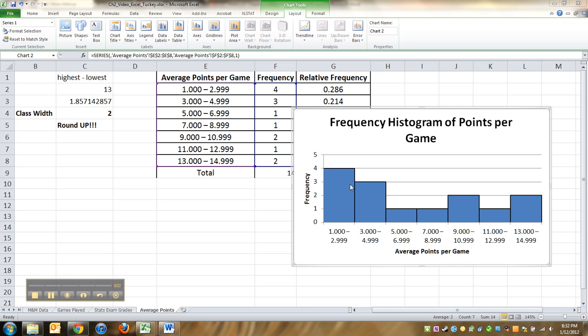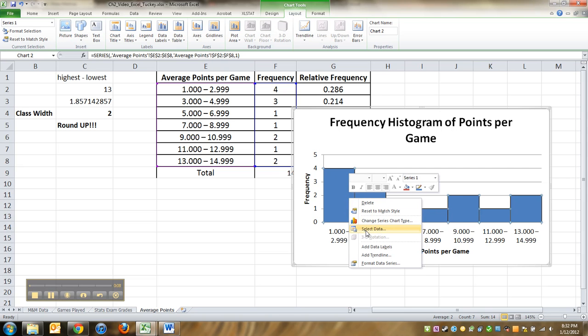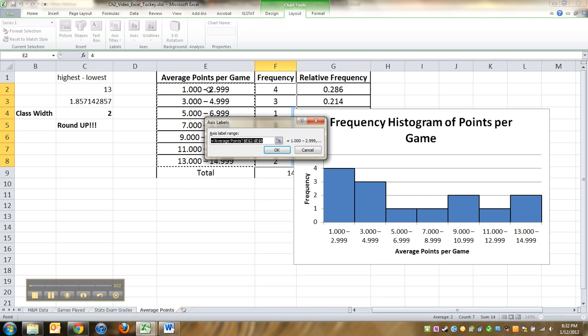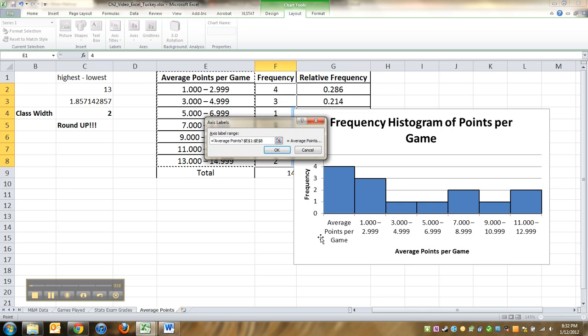So in case you missed it right at the very end there, you right-click on the bars. Notice how all the bars are highlighted. You choose select data and you want to edit the horizontal category labels to be these. Don't choose the average points per game. If you do that, then it'll make that first bar average points per game, which isn't what you want.